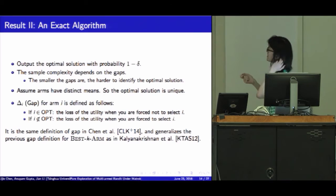And now we move to our exact algorithm. In this case, we want to output the optimal solution with probability at least 1-minus-delta. So we need to define kind of gaps. The smaller the gaps are, the harder it is to identify the optimal solution. We assume that all arms have distinct means, so the optimal solution is unique, just for simplicity.